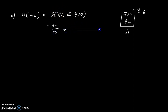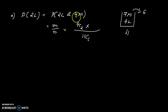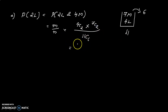The numerator involves selecting two ladies from four, which is 4C2, and four men from seven, which is 7C4. So the probability equals 4C2 times 7C4 divided by 11C6. Using a scientific calculator, the answer is 0.45.